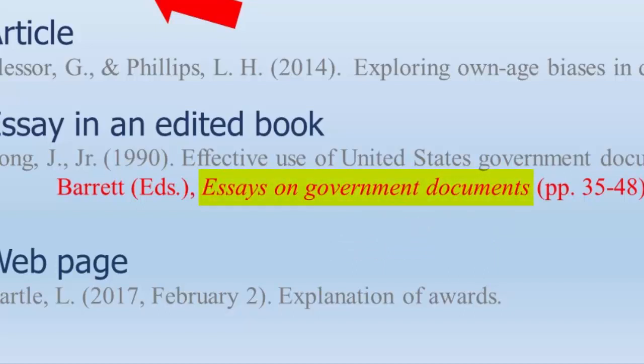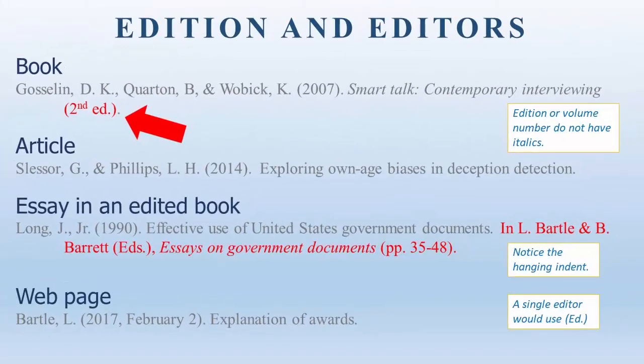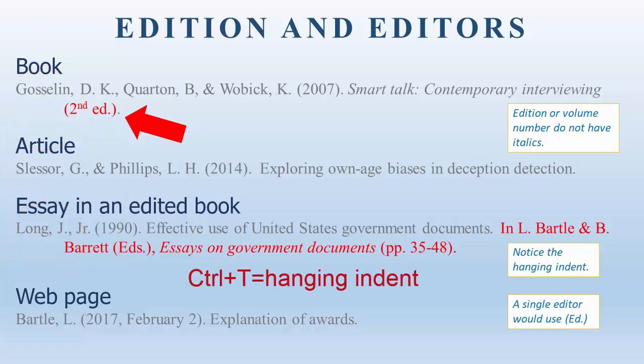Next comes the title of the book where you can find the essay. It is in italics because books are in italics, it is in sentence case, and it is followed by the page span where the essay can be found. It is formatted as parenthesis, lowercase pp followed by a period, space, and the page span where the essay can be found in the book. Then close the parenthesis and end with a period. Notice that the page span is not in italics. Also, the citations are long enough now to show the hanging indent. To create a hanging indent, type up all your citations, then highlight them all and type Ctrl T. On Mac, Command T will do the same thing. All citations should be double-spaced.